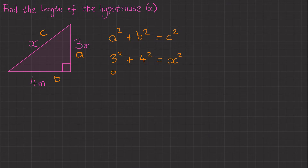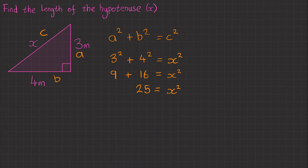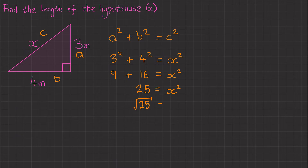Let's calculate that. So we've got 9 plus 16, which equals x squared. 9 plus 16 equals 25, so 25 equals x squared. But we're not after x squared, we're just after x. In order to do that, we need to do the inverse of squaring, which is square rooting both sides. That leaves us with the square root of 25 equals x. The square root of 25 is quite a nice number — it's 5. So our final answer is x equals 5 meters.